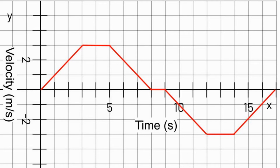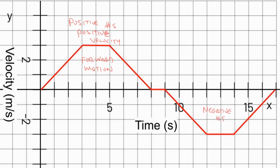In a velocity-time graph, when we have positive numbers, that means we have positive velocity, or forward motion. And when we have negative numbers, that means we have negative velocity, which means we have backward motion.